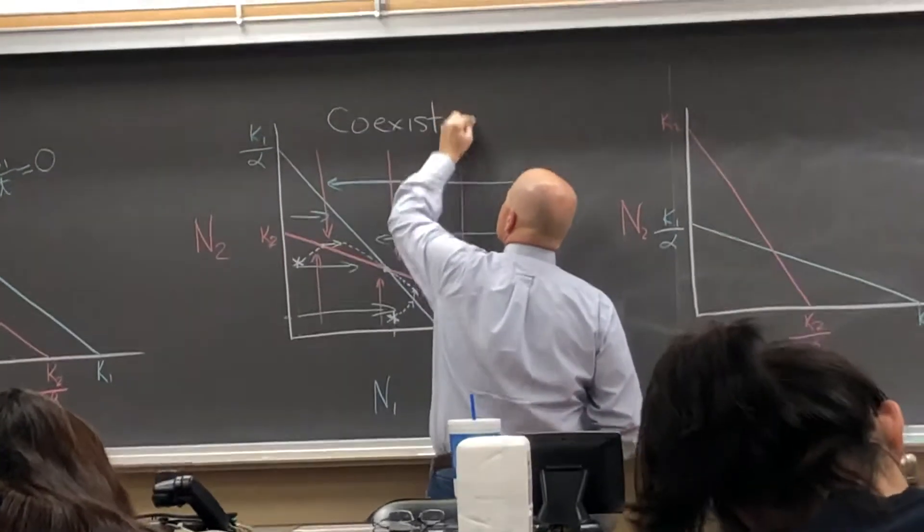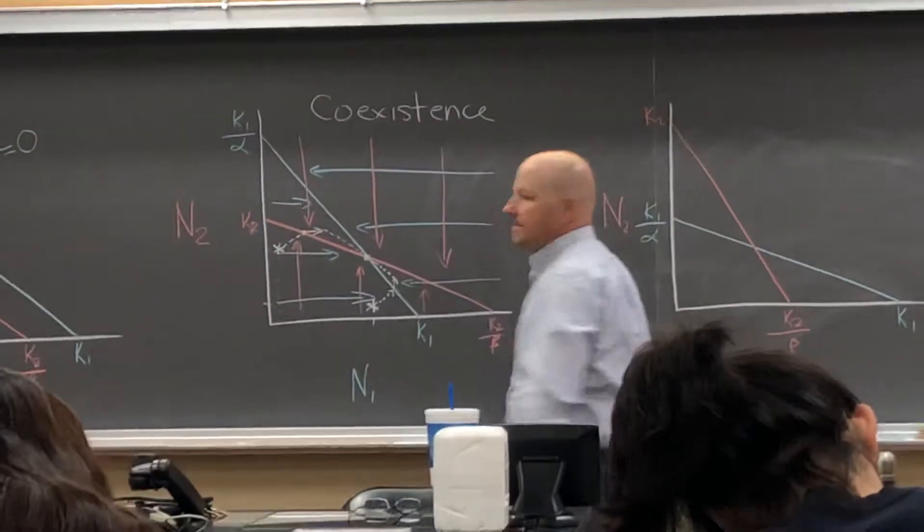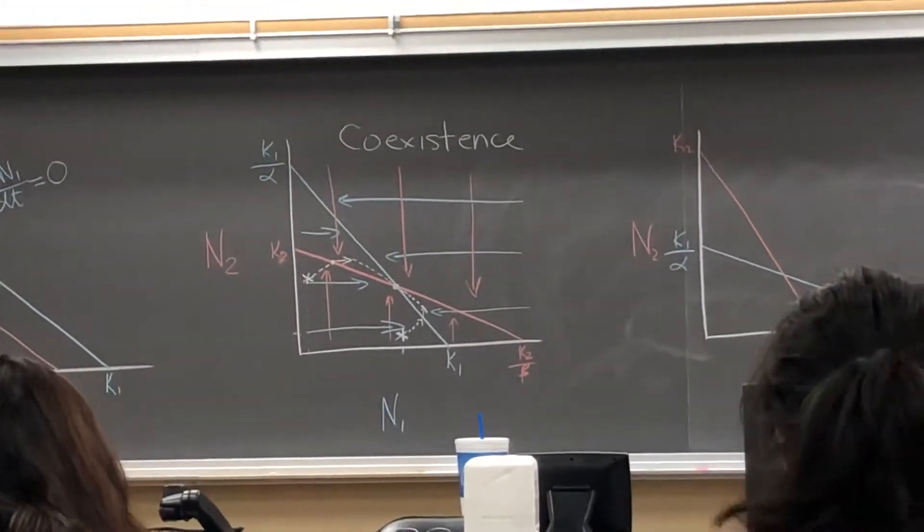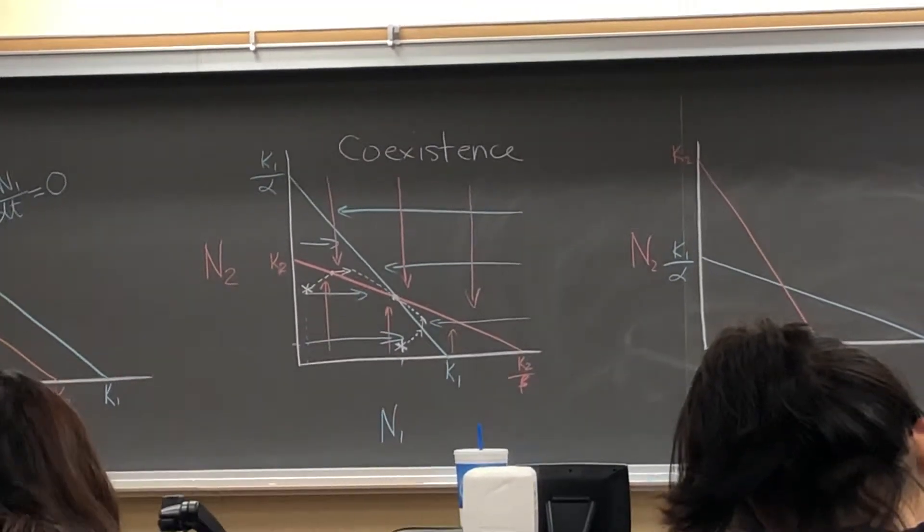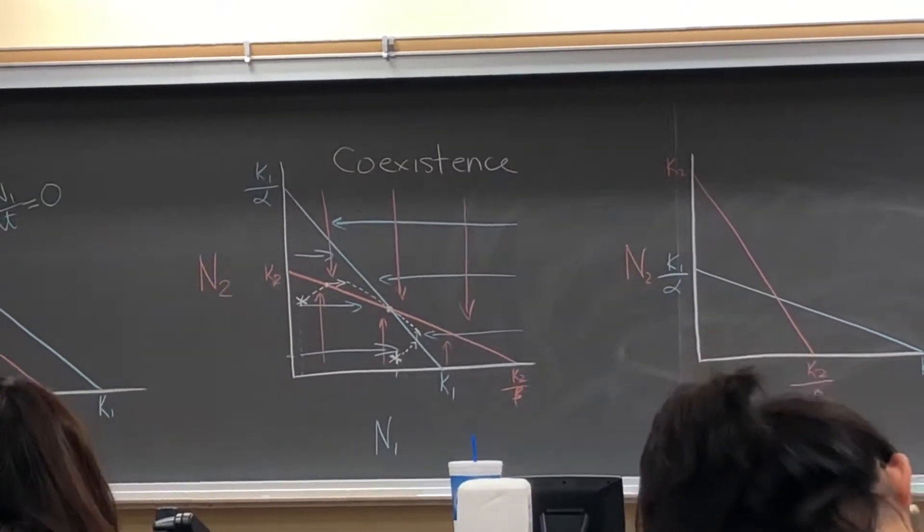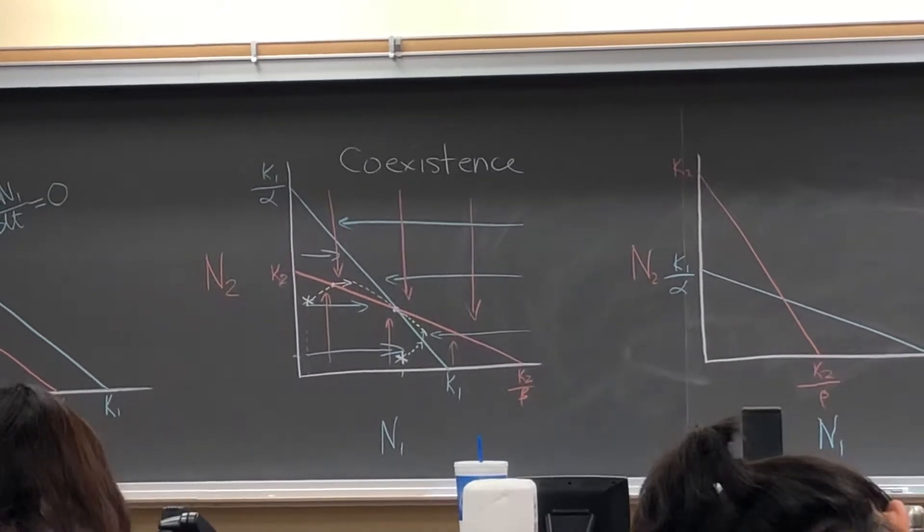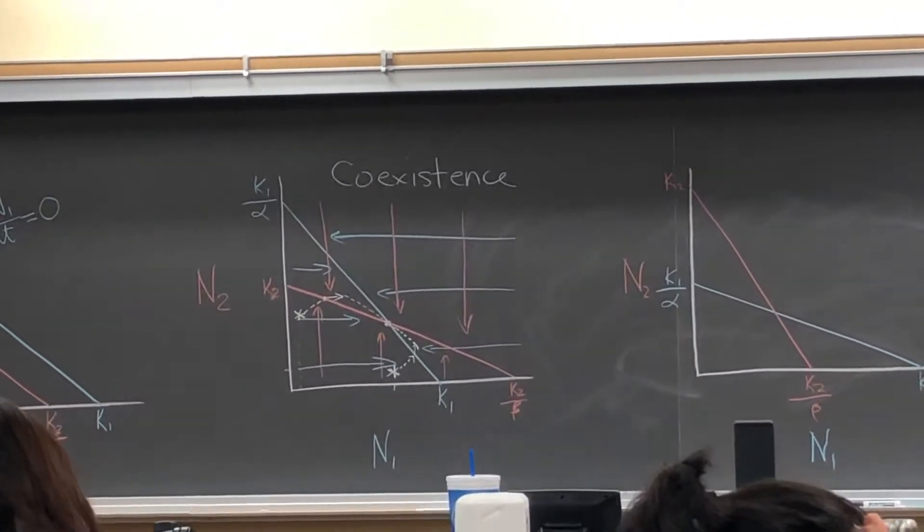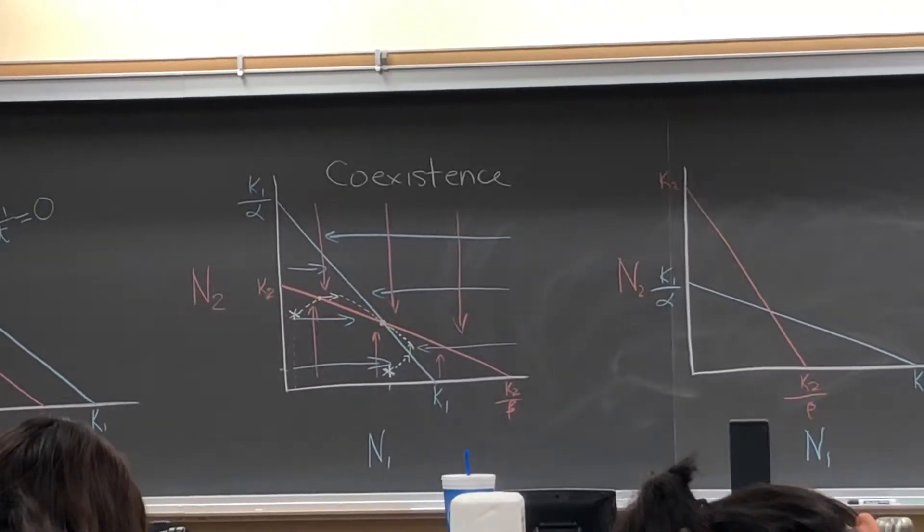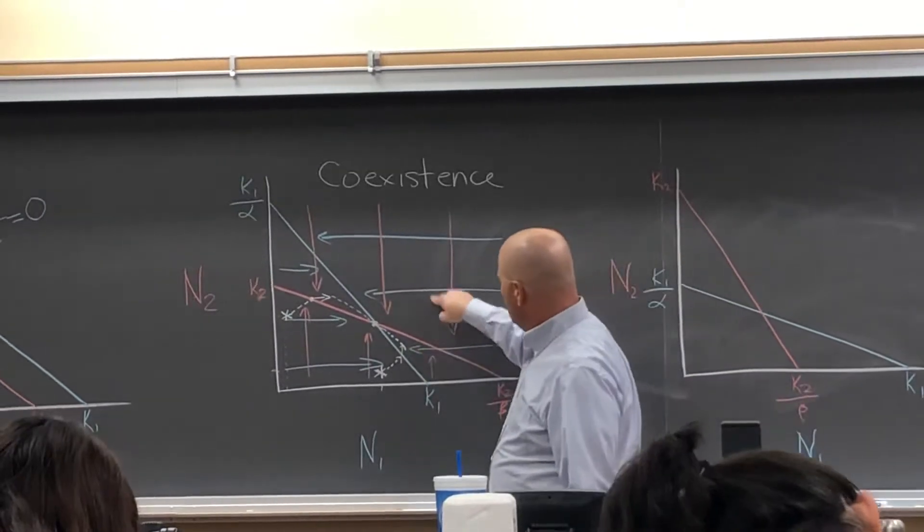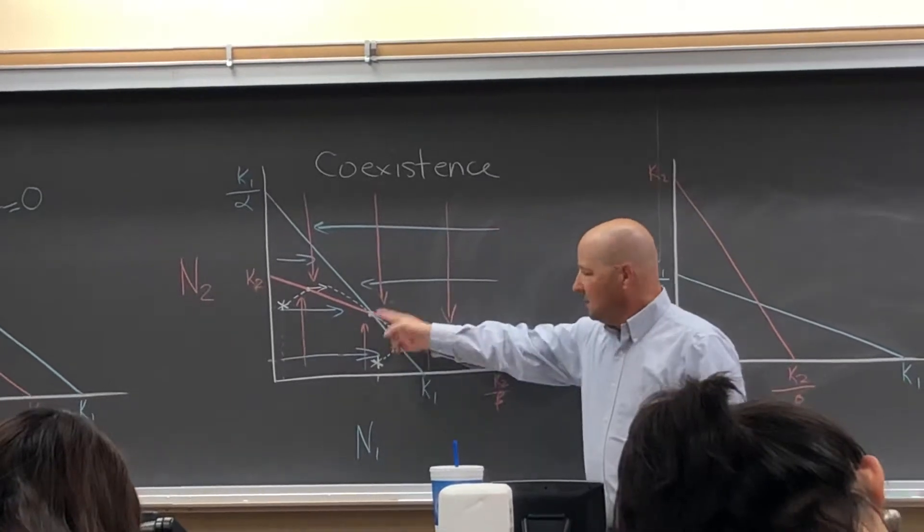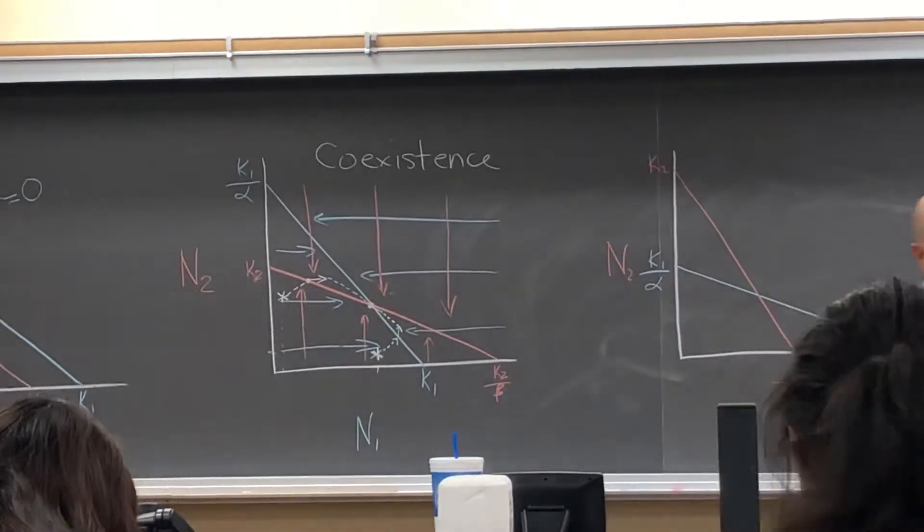Coexistence. So this is a case where we have coexistence between two competitors. Neither of the two species can gain a long-term competitive advantage. Neither species has the ability to out-compete the other. And they tend to, no matter what the environment does, their population sizes, wherever you end up here, eventually comes back to that equilibrium point.